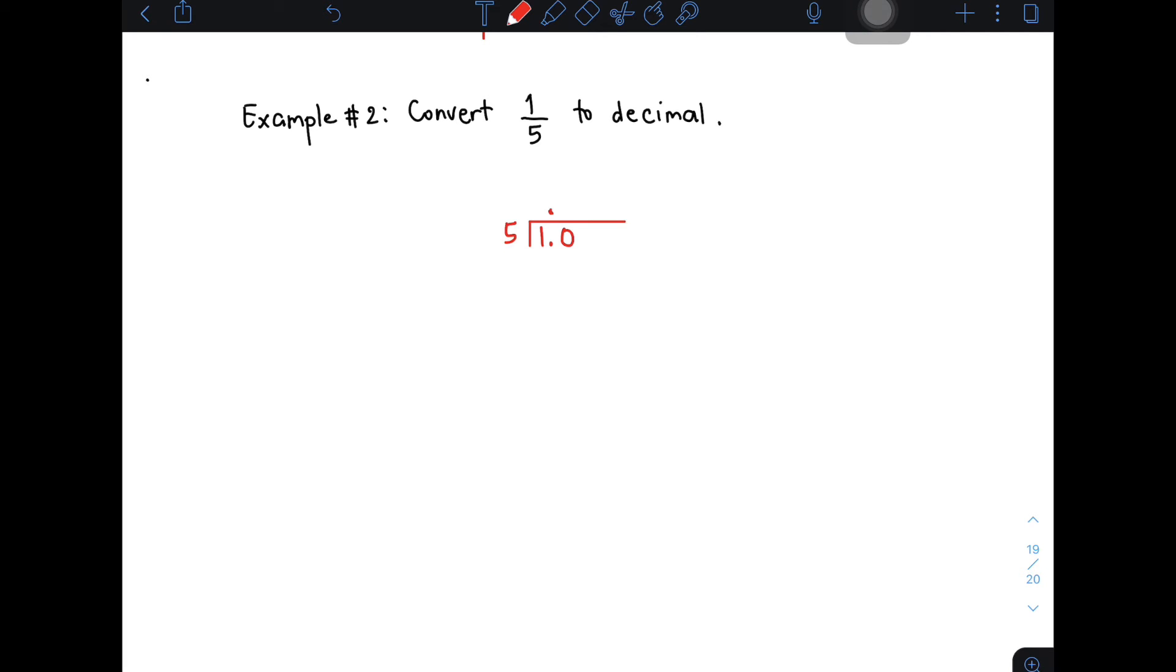Since we have 10, 10 divided by 5, that is 2. Then 2 times 5, that is 10. When you subtract, that will give you 0. And the answer is 0.2. This is the answer for item number 2.